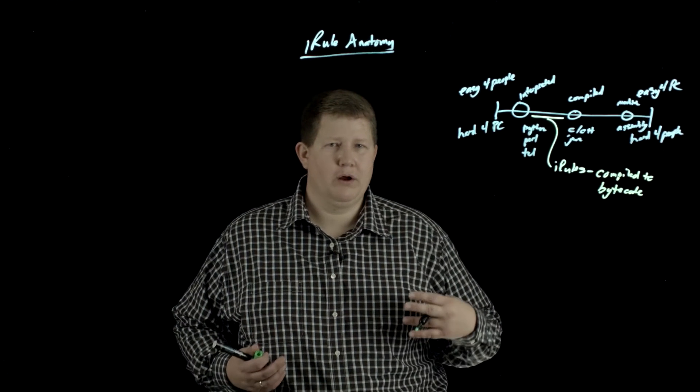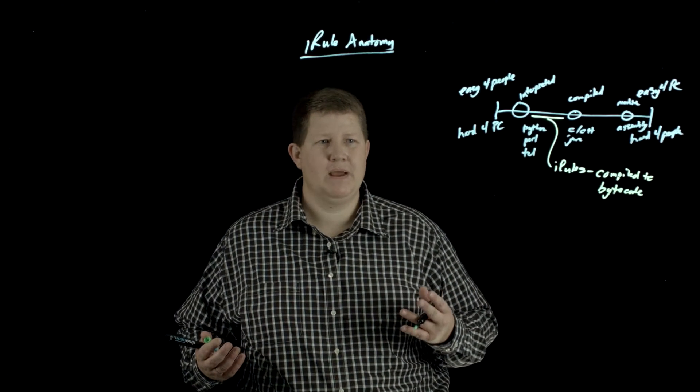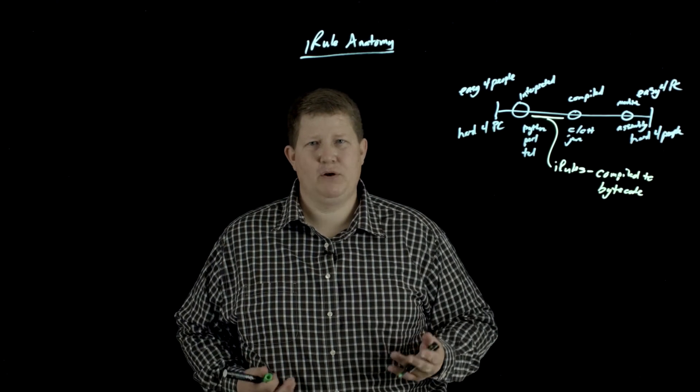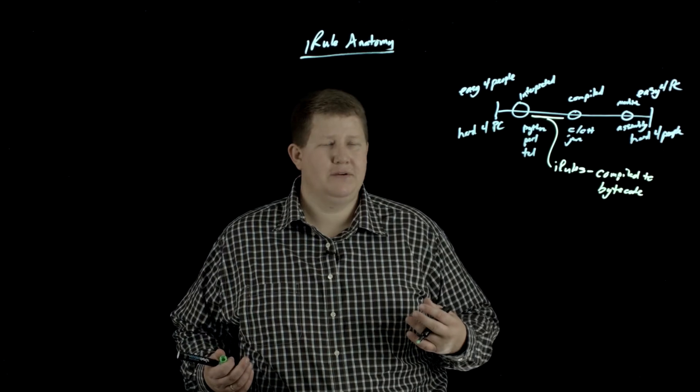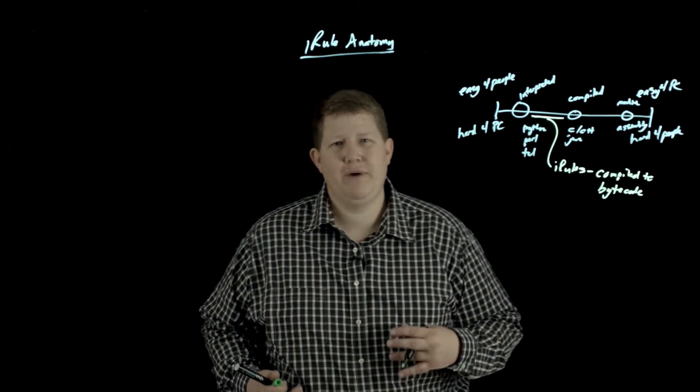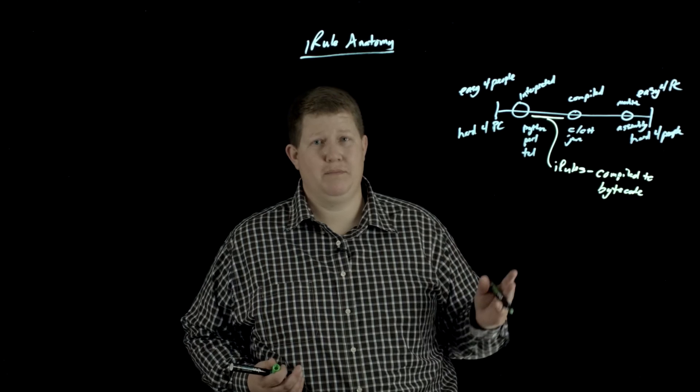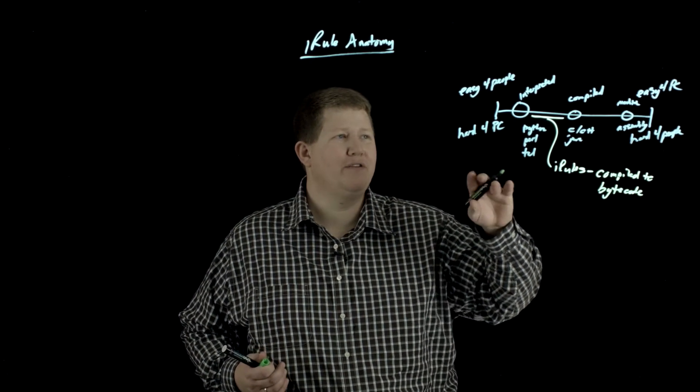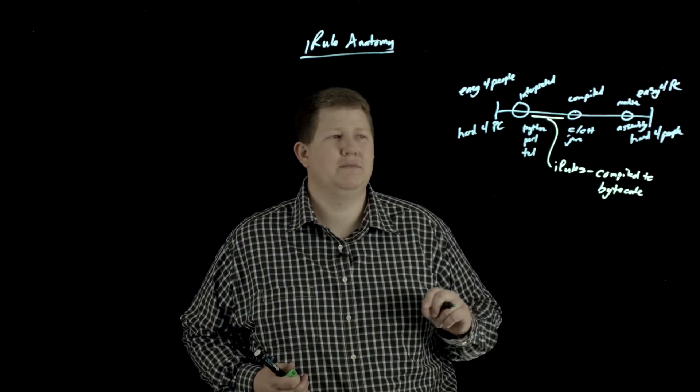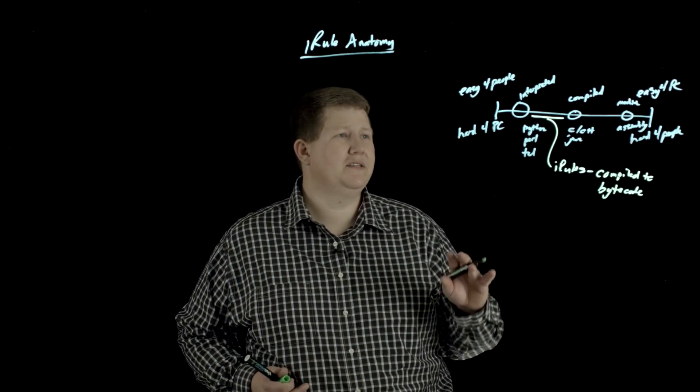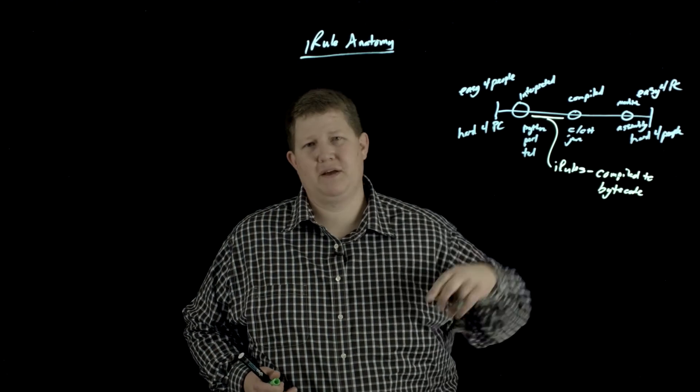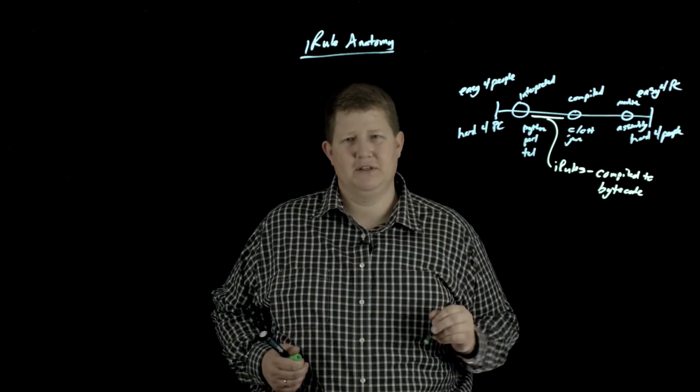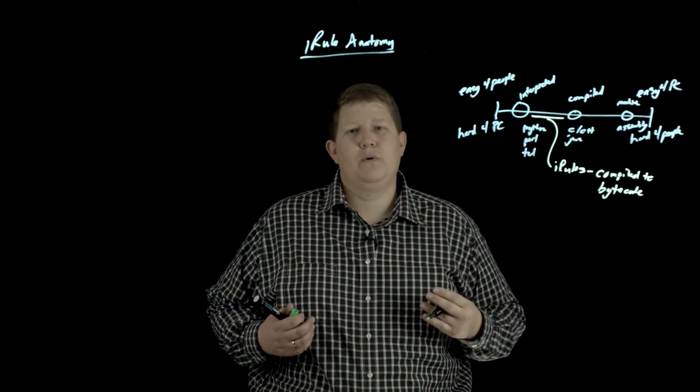However, if you have hundreds of thousands of connections per second coming through your box and you have to fire up a runtime interpreter for every single connection that comes through, that's obviously going to slow your box down like crazy. So that's why everything's compiled to bytecode - makes it very fast, very lightweight. That's where iRules live in that spectrum.